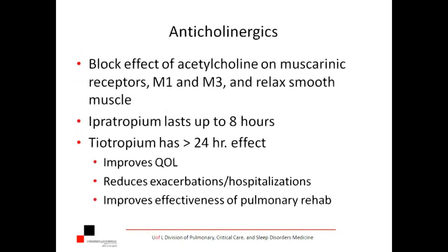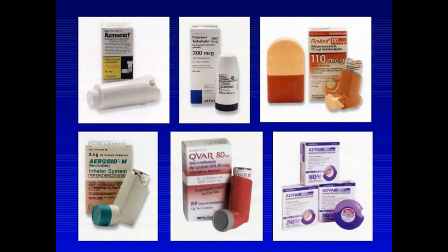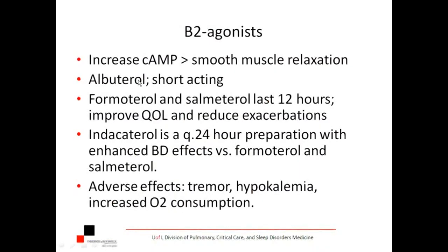There are other types of dry powder inhalers — they all look a little different and work differently mechanically, so it's very important to make sure your patient understands how to use the device. Beta-2 agonists work by increasing cyclic AMP, which translates into smooth muscle relaxation. Albuterol is short-acting. Formoterol and salmeterol last 12 hours — formoterol has a fairly rapid onset similar to albuterol within minutes; salmeterol probably peaks at about an hour.